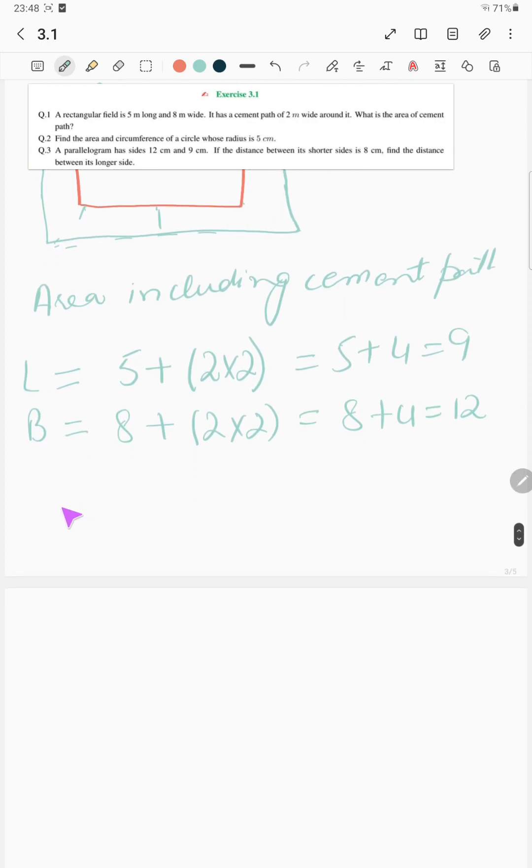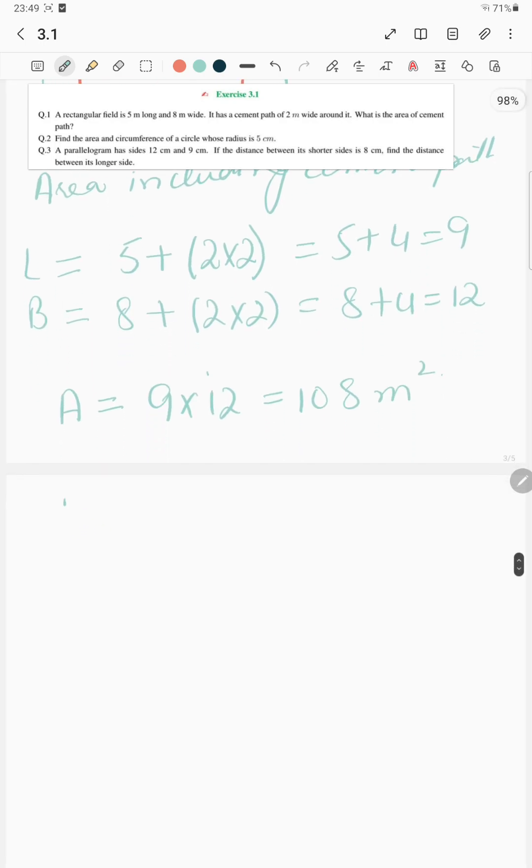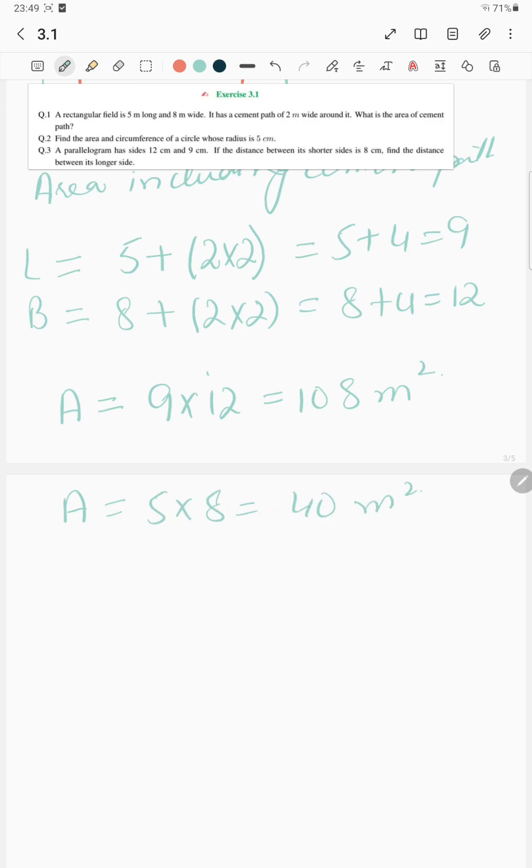So area including the cement path would be 9 multiplied by 12, which is equal to 108 meter square. So simple area of the rectangle is 5 into 8, which is 40 meter square.